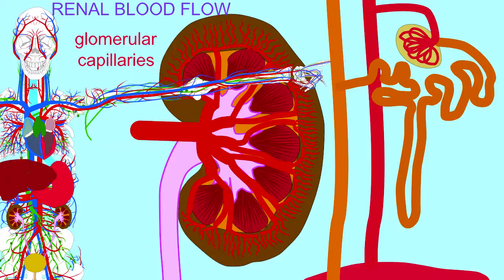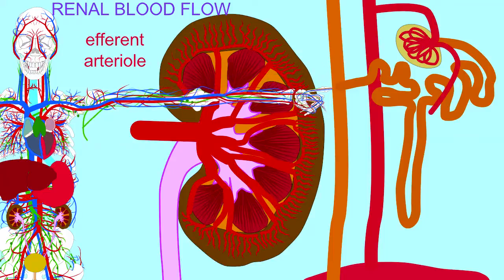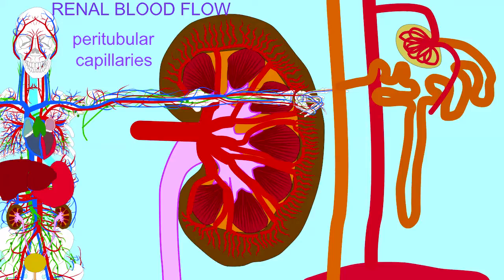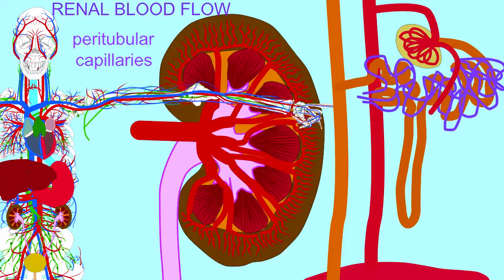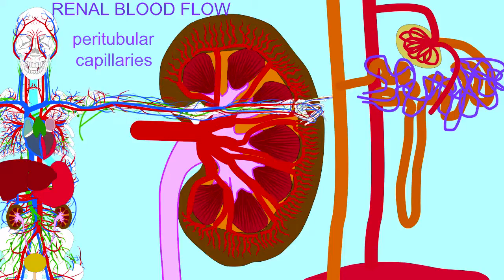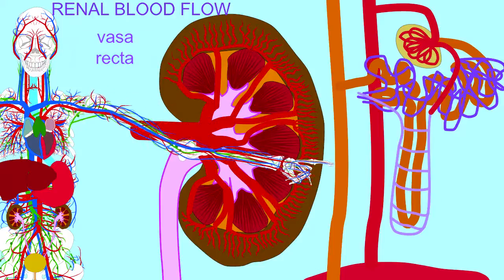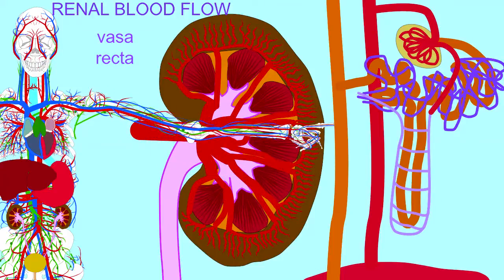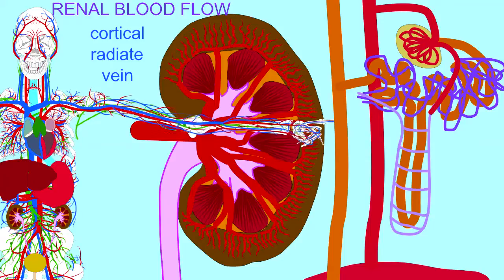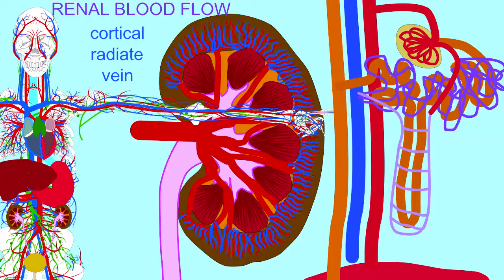The glomerular capillaries are drained by efferent arterioles. Nowhere else in the body are capillaries drained by an arteriole. These efferent arterioles then form a second capillary network — either the peritubular capillaries around the PCT and DCT, or the vasa recta which surrounds the loop of Henle.